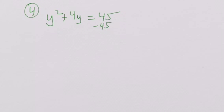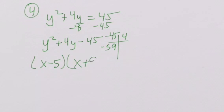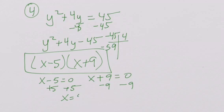I'm going to need to zero pair out the 45 in order to factor. So I have y squared plus 4y minus 45 to factor. Using the factor T method: negative 45 on one side and 4 on the other, I'm going to use positive 9 and negative 5. So the factors are x minus 5 and x plus 9. If I'm factoring, I stop there. If I'm solving: x minus 5 equals 0 gives x equals positive 5; x plus 9 equals 0 gives x equals negative 9. So my two roots are negative 9 and 5.